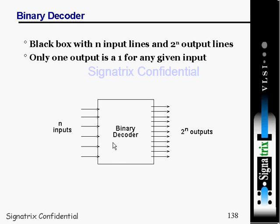Like in the case of memories, we are using a decoder there. For example, suppose n is 3 bits — so how many possible combinations should come at the output terminal? 8. So that is what they are trying to say from this binary decoder.